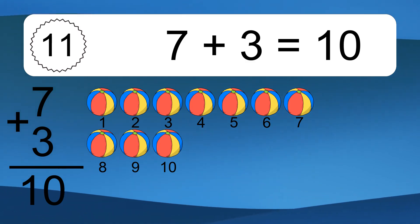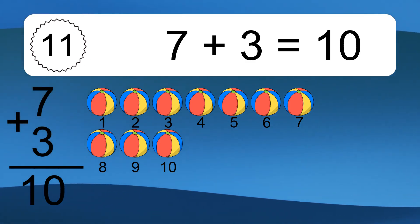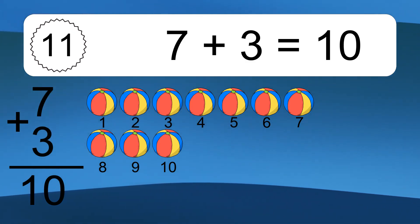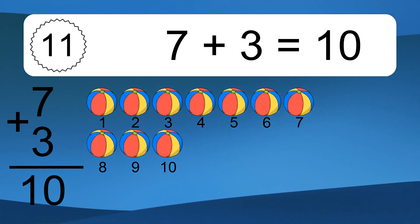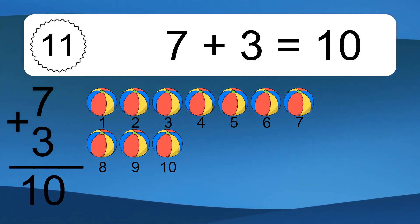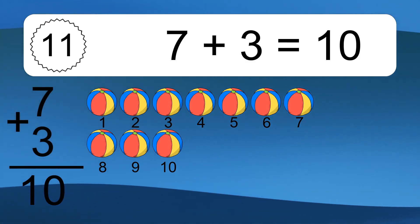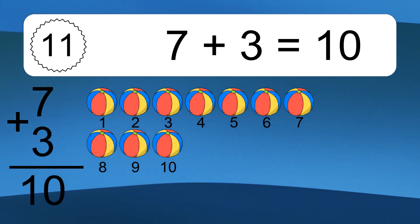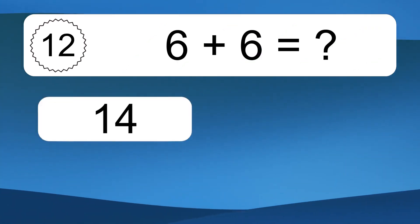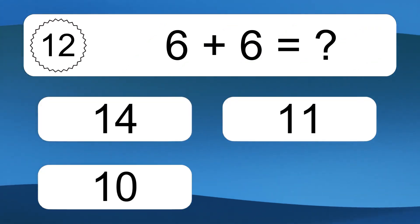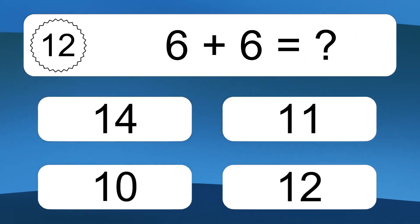7 plus 3 equals what? Let's count it. 1, 2, 3, 4, 5, 6, 7, 8, 9, 10.